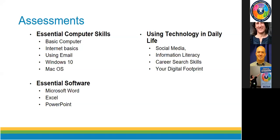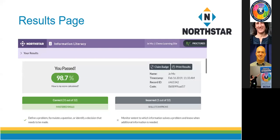The assessments themselves are free for anyone to take on our website. When you take an assessment, you get a results page showing whether you passed. You need 85% to pass. The green column lists all skills you've mastered, and the purple column lists what you need to work on. So if you got 70%, it would tell you exactly what you or your learner needs to address before retaking the assessment.